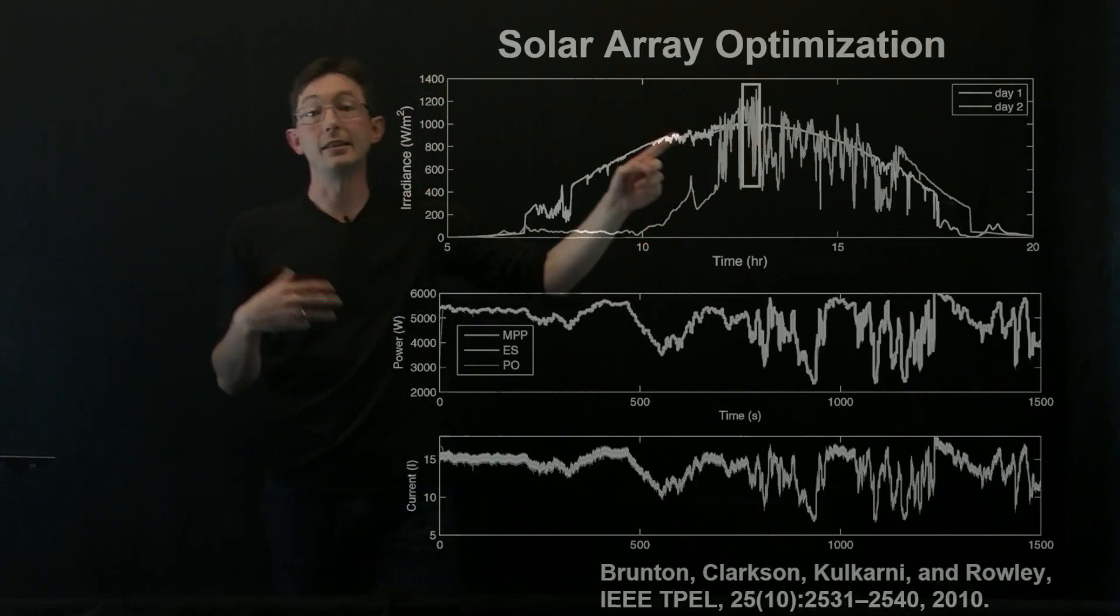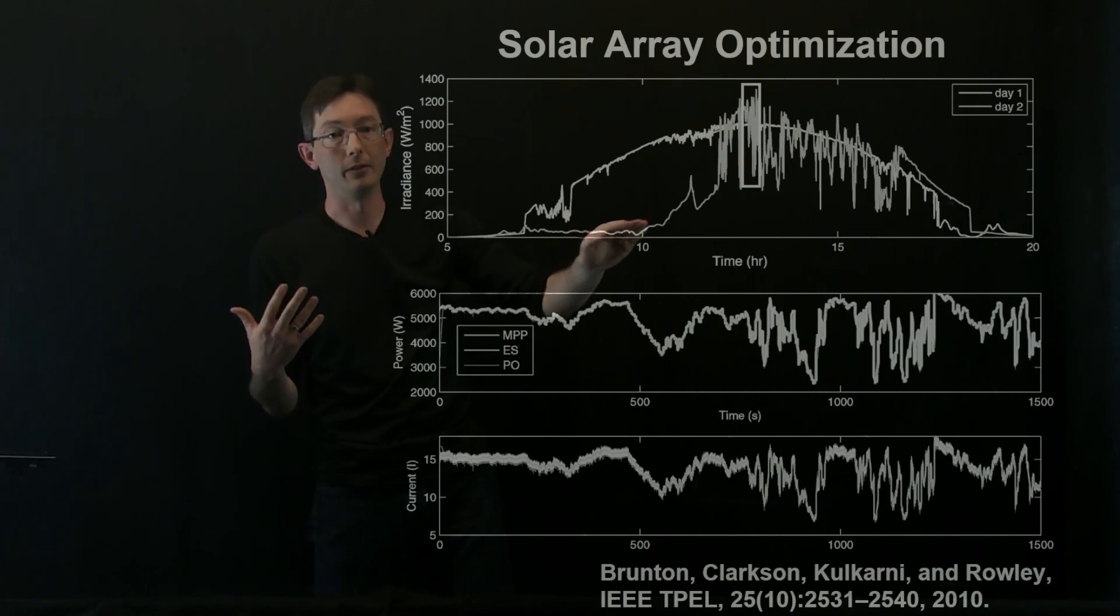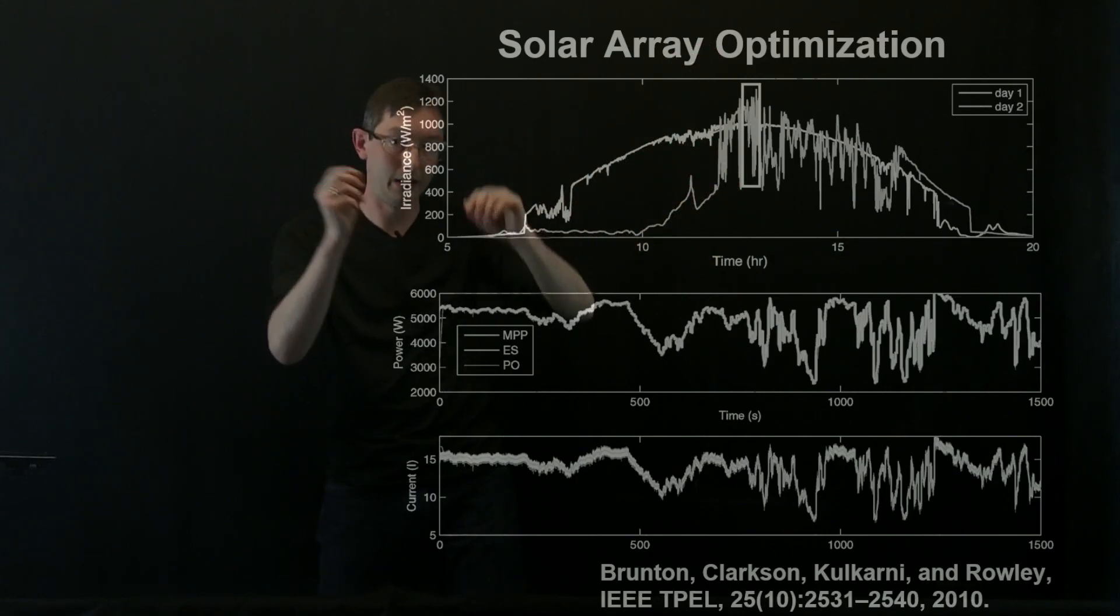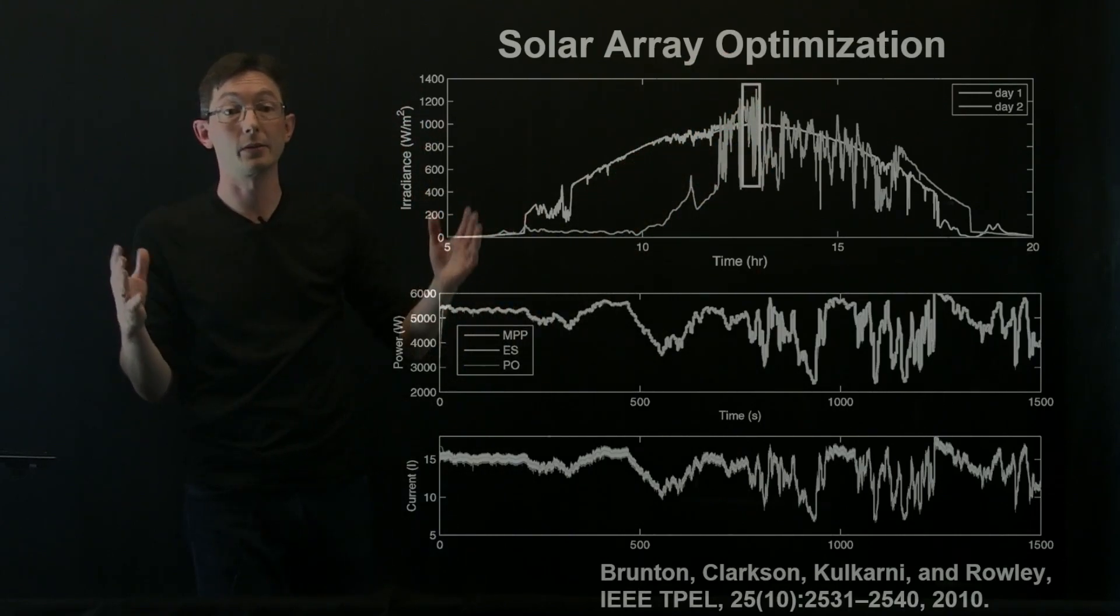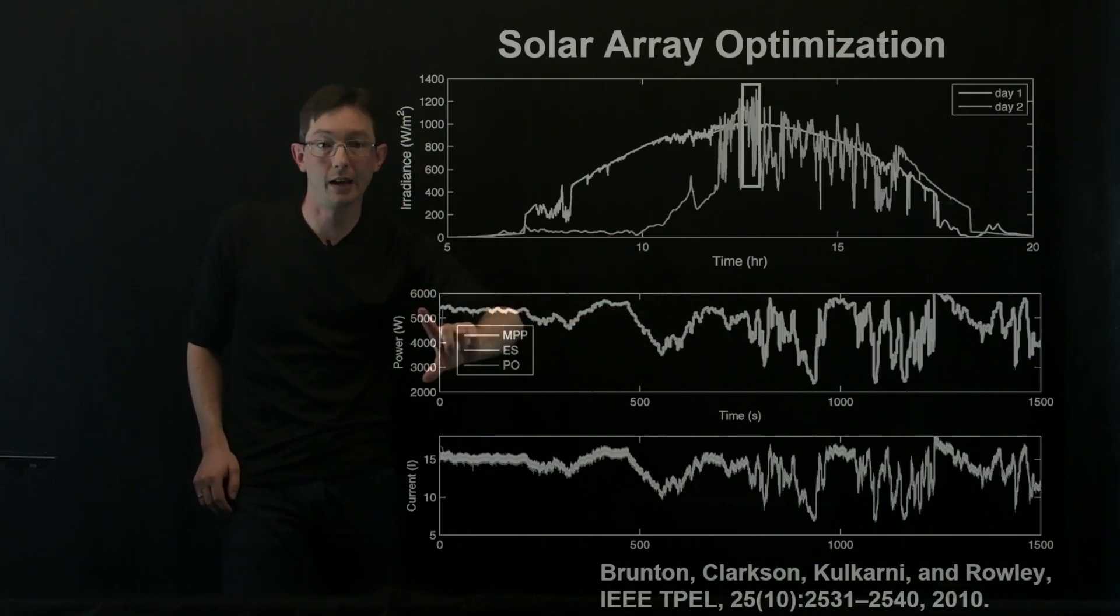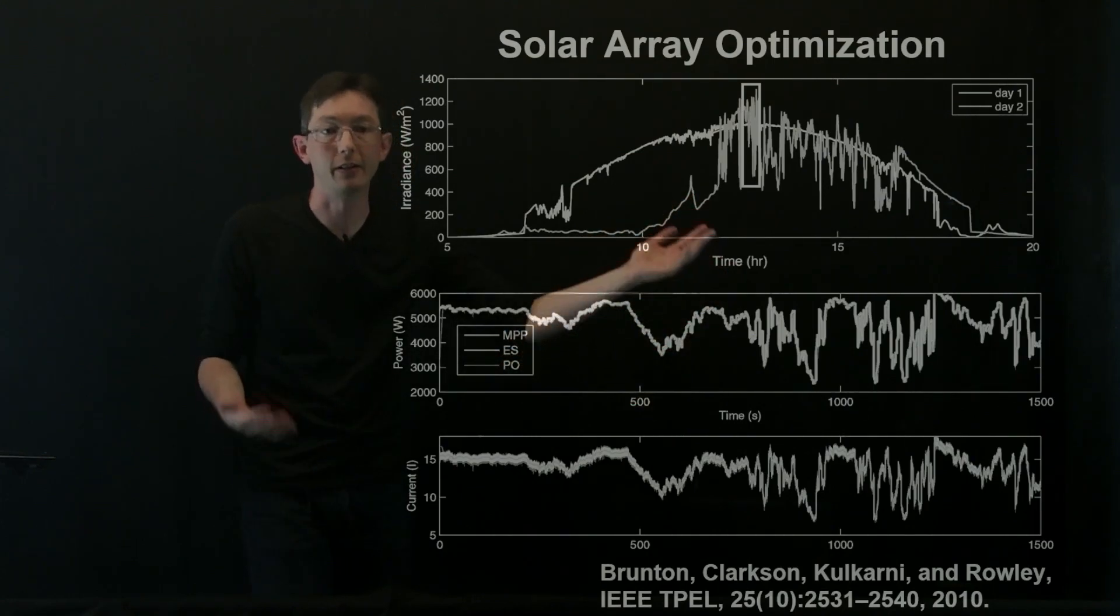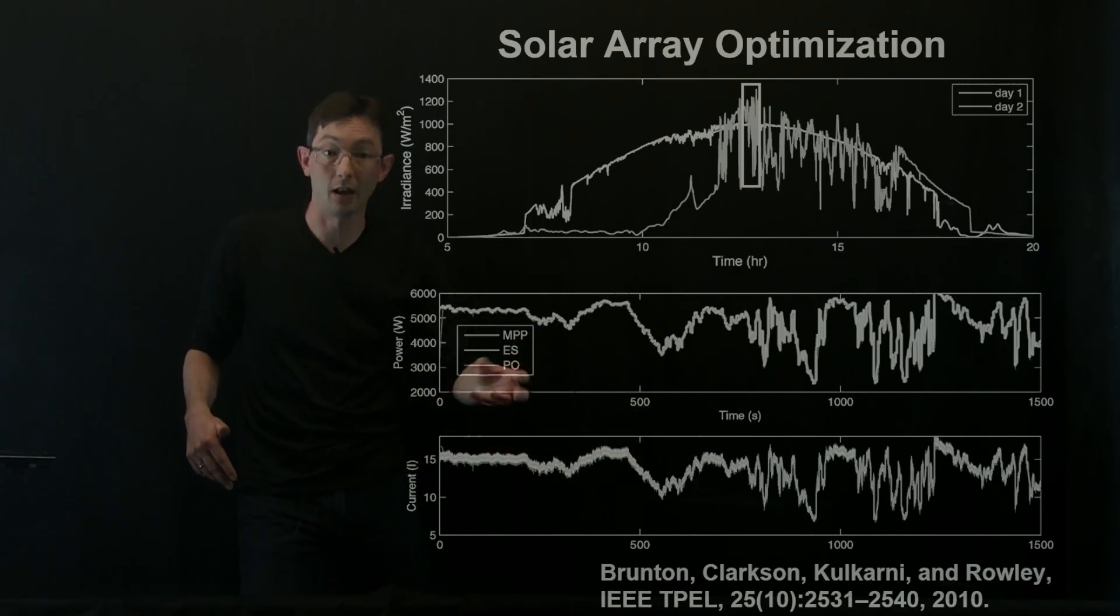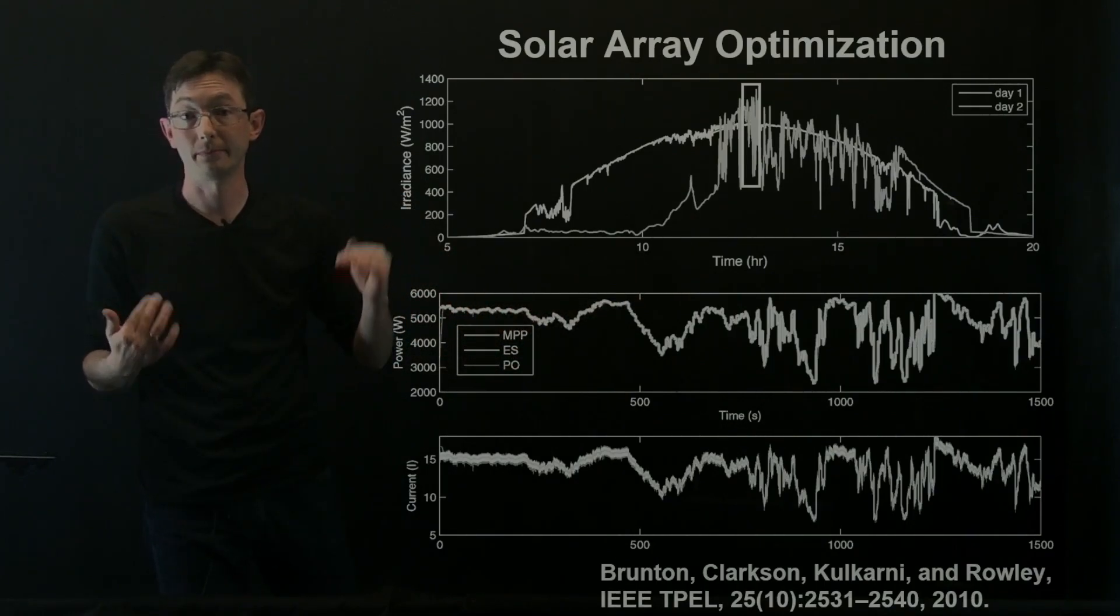But then on day two, you can see this is an example of real New Jersey weather. In day two, there's cloud cover. The cloud cover breaks sporadically and you get lots of sunlight. Then the clouds roll over, you get lots less sunlight. And this is very highly variable over the course of minutes or seconds. So I'm zooming into this little box here on day two, and you can see the power output is wildly swinging over the course of just a matter of minutes or hours. And this is the optimizing current, the control current that we have to continuously adjust to maintain the maximum power condition.